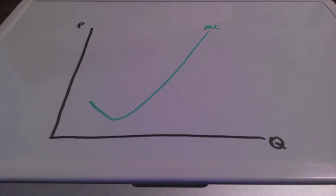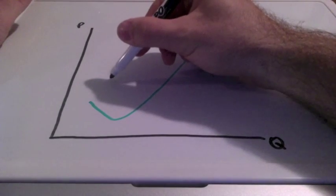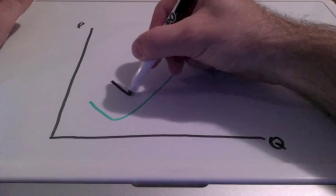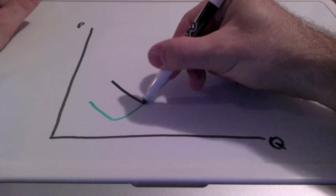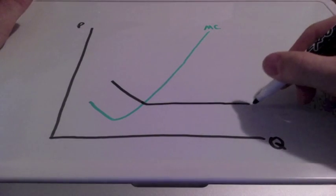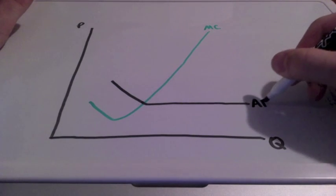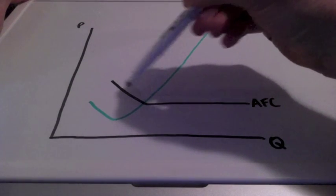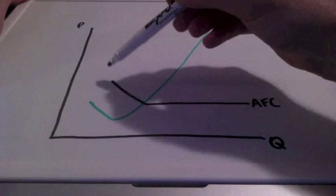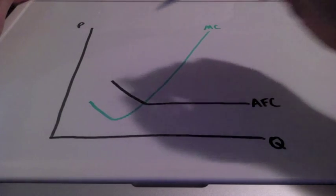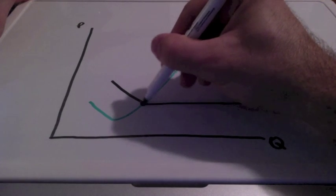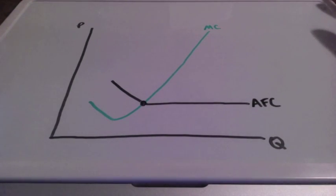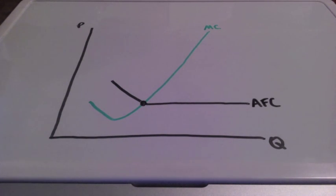The next cost curve is called our average fixed cost. All our curves are going to start off in this downward shape — when units are cheap, costs will be low and productivity will be high. Average fixed cost: the fixed costs are costs that do not vary with the quantity of output produced. An example of this would be a mortgage payment or rent.